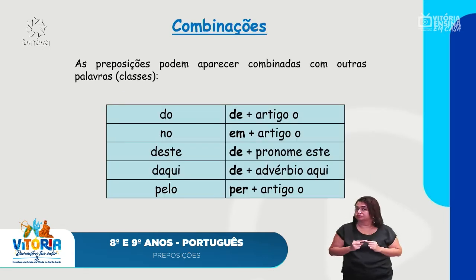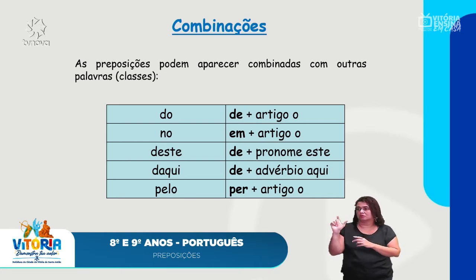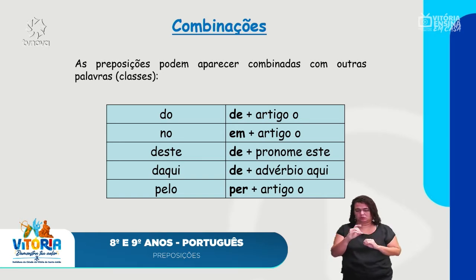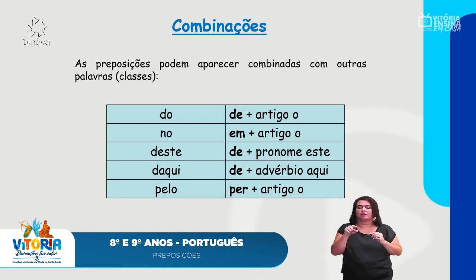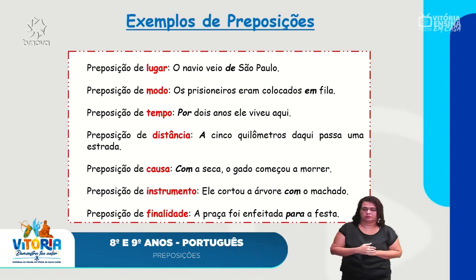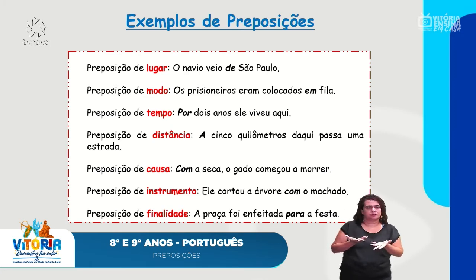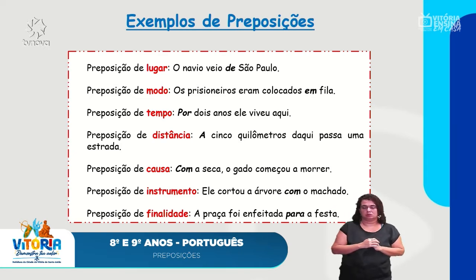Temos aqui as combinações. As preposições podem aparecer combinadas com outras palavras. Por exemplo, 'do' — o 'de' mais o artigo; 'deste' — o 'de' mais o pronome 'este'; 'pelo' — o 'per' mais o artigo. Mais exemplos de preposições: preposição de lugar, de modo, pode também indicar tempo, distância, causa, instrumento ou finalidade.